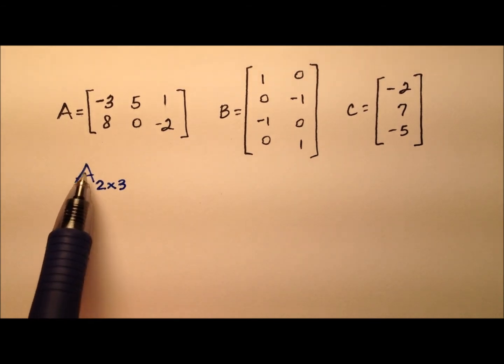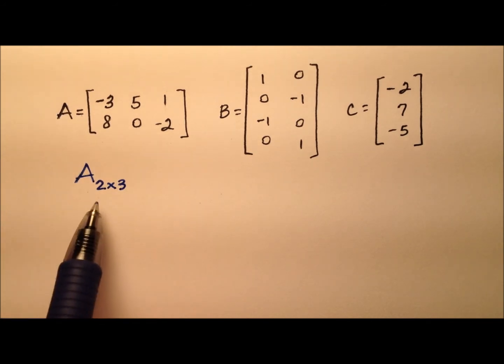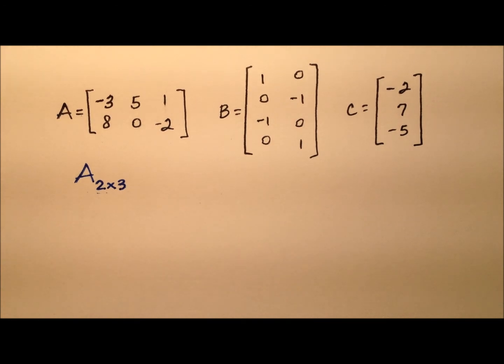then we'll say matrix A is a 2 by 3. We use capital letter A, and most matrices we're going to see use capital letters for their definition. And then the dimensions are 2 by 3, 2 rows by 3 columns.